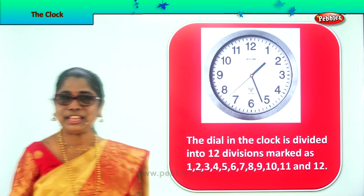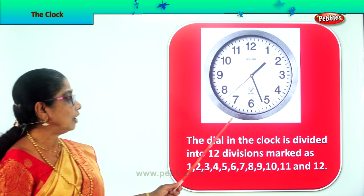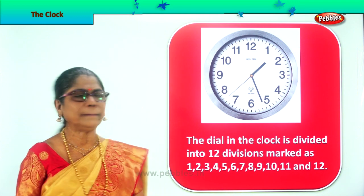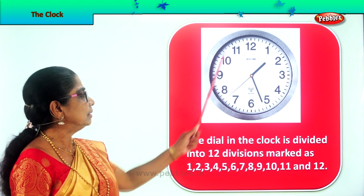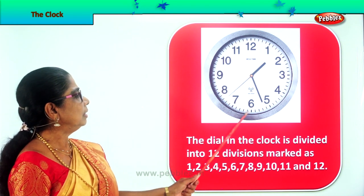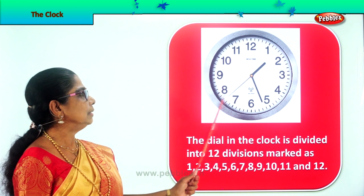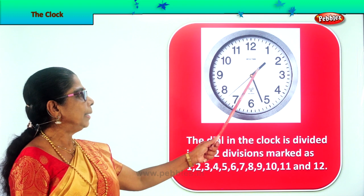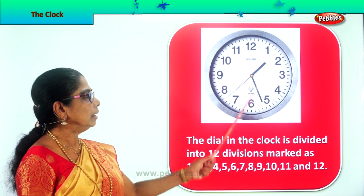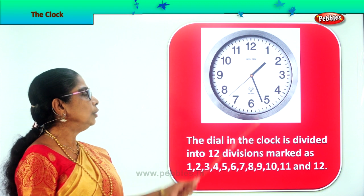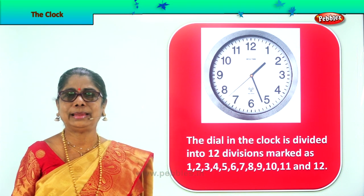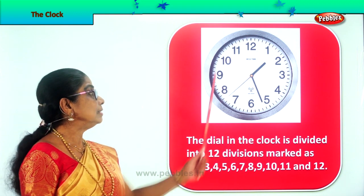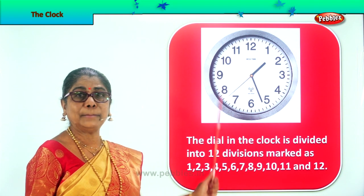Look at this. This is a lovely, huge, colourful clock. Now, what does the clock have, children? It has the numbers. It is called the dial — clock dial. There are numbers. There are hands. Actually, there is one big, fat, thick hand and a long, thin hand. You also have a tiny one — also a hand.